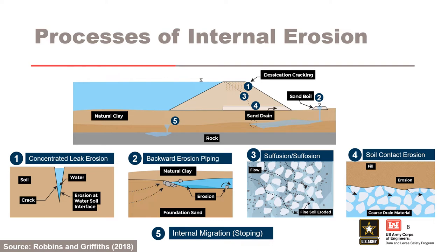The hydraulic gradient influences the likelihood of initiation and in some cases progression of each of the five internal erosion processes. For concentrated leak erosion, it is used to estimate the hydraulic shear stress for initiation. For backward erosion piping, it includes the vertical exit gradient for initiation and horizontal gradient for progression. For suffusion, it includes the exit gradient for initiation. For soil contact erosion, it is used to estimate the Darcy velocity for initiation. For internal migration, a vertical downward gradient is required.